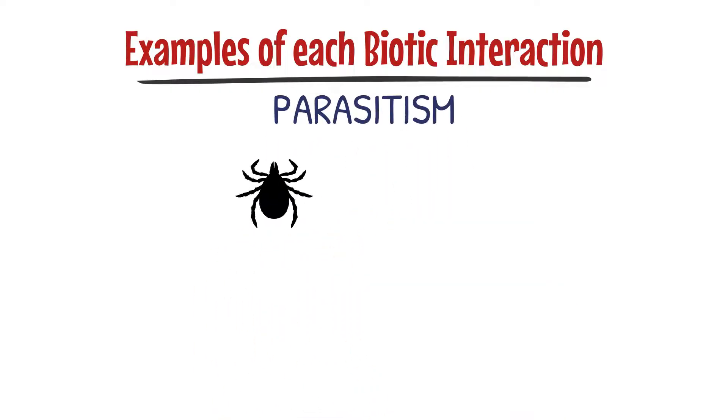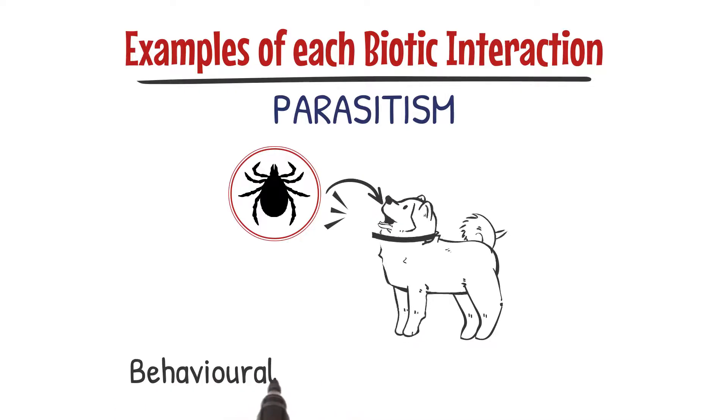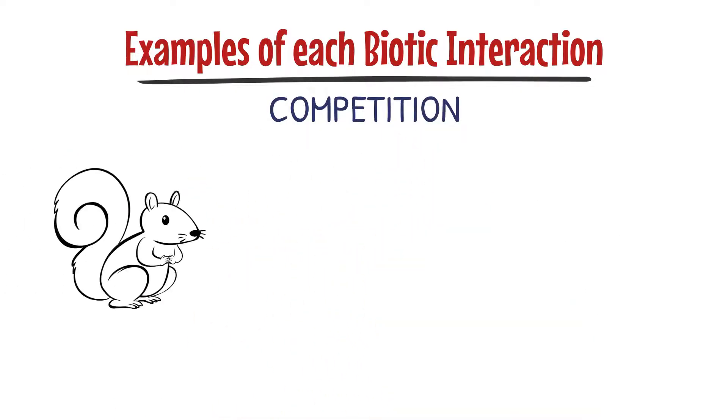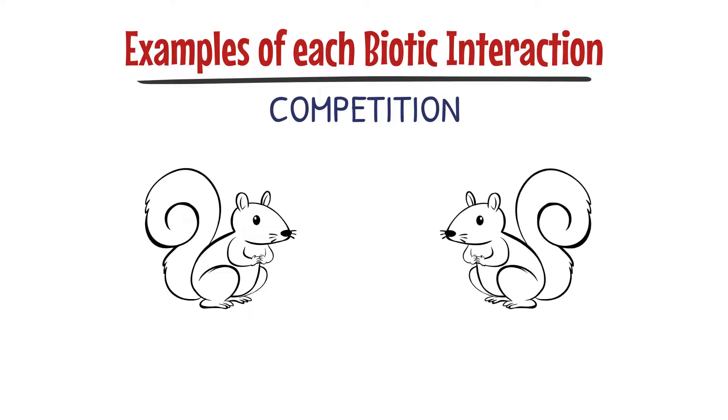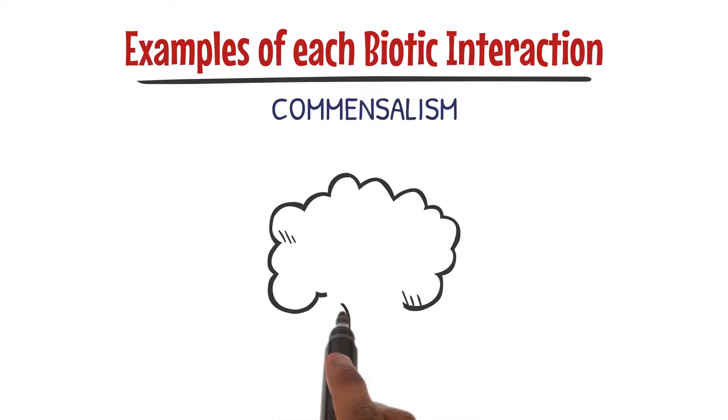Parasitism: think of a tick attaching itself to a dog and feeding on its blood while the dog gets irritated and harmed. Competition: imagine two squirrels fighting over the last acorn in a tree, a true battle for survival. Commensalism: picture a bird building its nest in a tall tree, getting a safe home while the tree isn't harmed nor benefited.